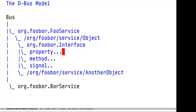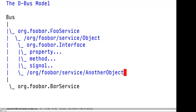Properties are attributes that can be read or written. Methods are verbs that you can call to invoke an action, and a signal is something used to move state between a service and another participant on the bus. There can be any number of interfaces on an object, any number of objects in a service, any number of services on a bus, and any number of buses on a system.